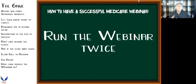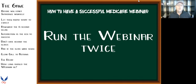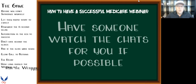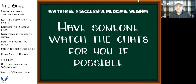Run the webinar twice — schedule it live two different times. People who couldn't make the first one can make the second. Try different times and days to see which works best for your audience. Maybe someone's stuck in their car during the first session and catches the second one. Running it twice gives you more reach and two chances to connect.